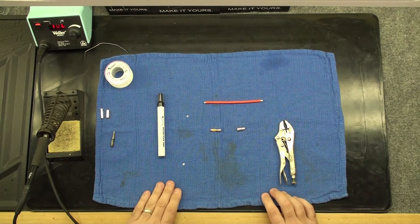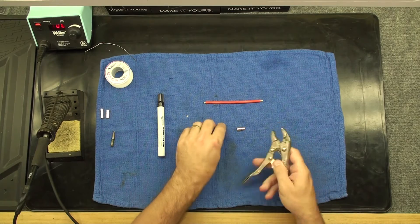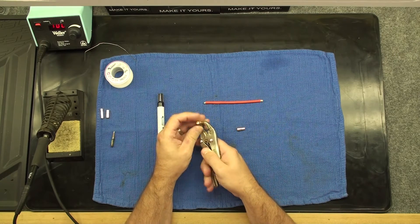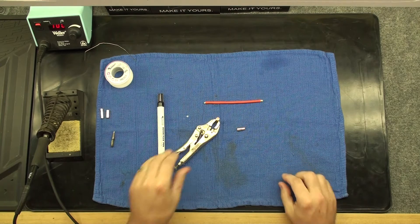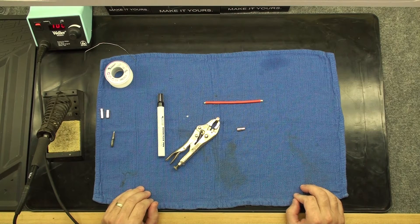We can now take our bullet connector and place it in the channel locks to make it secure for soldering. Now use our flux pen or paste on both the wire and the bullet connector.